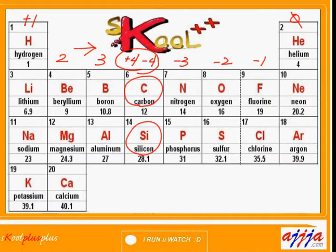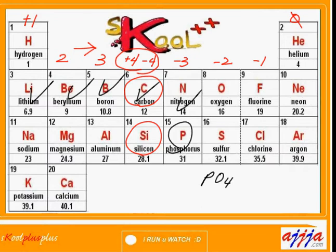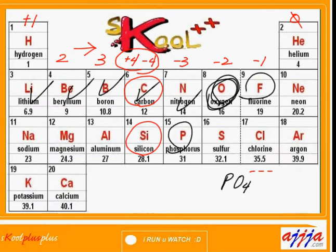Let's talk about PO4. Look at P first. In a chemical formula, the left-hand side is positive and the right-hand side is negative — ionic bonding. P is in column five, so it's positive five. What about O? Oxygen is negative two — and there are four of them, so that's negative eight. Together: positive five and negative eight gives us negative three. That's PO4 with a charge of negative three.